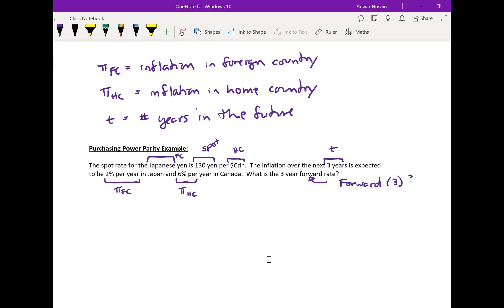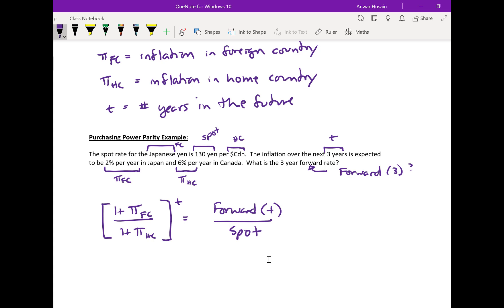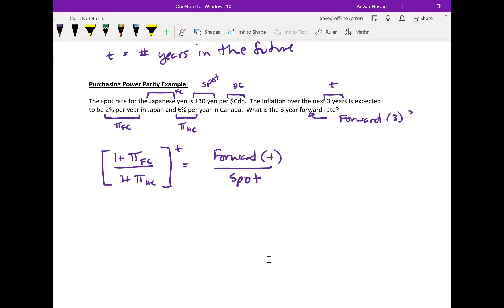Let's use that same formula. We're going to say that one plus the foreign inflation rate over one plus the home inflation rate, to the power of t, is equal to the forward rate at time t over the spot. We have everything except for the forward, which is what we're trying to solve for.